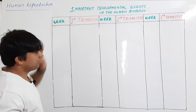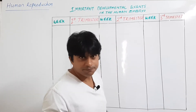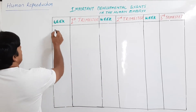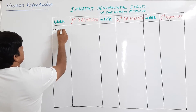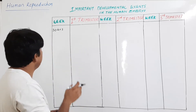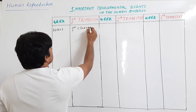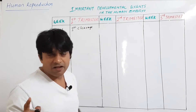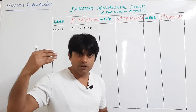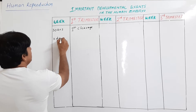In the first trimester, after fertilization — the site of fertilization is the ampulla — cleavage starts. 30 hours after fertilization, the first cleavage completes, and the zygote becomes two cells. Cleavage keeps continuing, and after several cleavages, at the end of the third day, morula is formed.